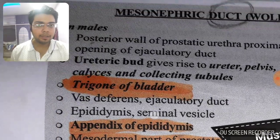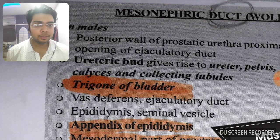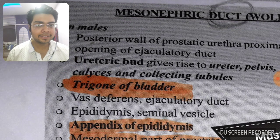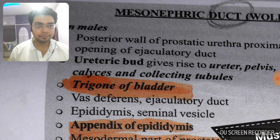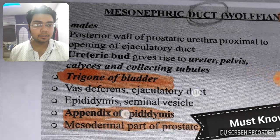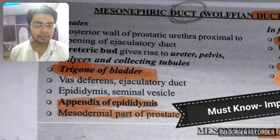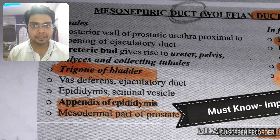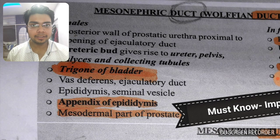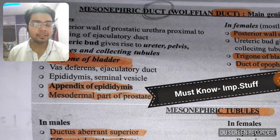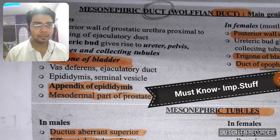One important separate MCQ: the ureteric bud gives rise to the ureter, pelvis, calyces, and collecting tubules. The trigone of the bladder is a very important MCQ topic and is also developed from the mesonephric duct in case of males.